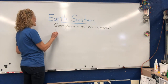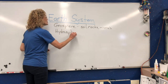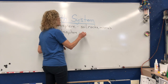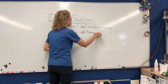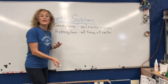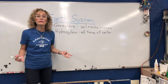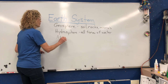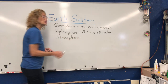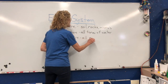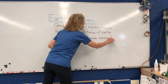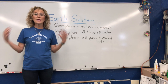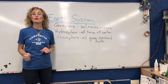Then there is the hydrosphere. We just talked about that when we talked about the water cycle. The hydrosphere is all forms of water on Earth — water can be a solid like ice, a liquid like water, or a gas like water vapor. Then we have the atmosphere, which we talked about in our last unit. That is all the gases that surround Earth, and those gases protect us from the sun's harmful rays and from things coming in from space and crashing into the Earth.